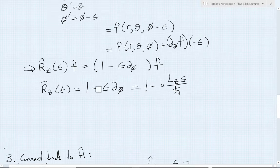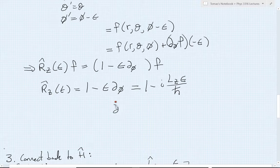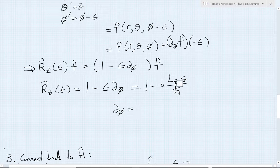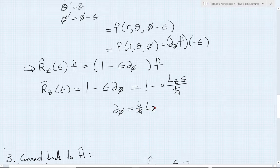well, the 1s will cancel, the minus signs will cancel, the epsilons will cancel, and I learned that d by d phi must therefore equal what's left over when I've gotten rid of the epsilon, and I'm keeping the Lz, i, and h bar. So it'll be i over h bar times Lz operator.